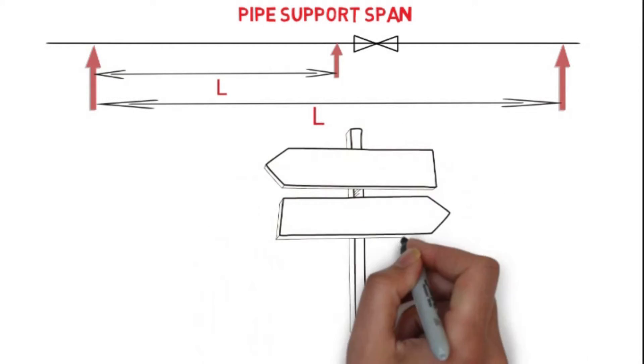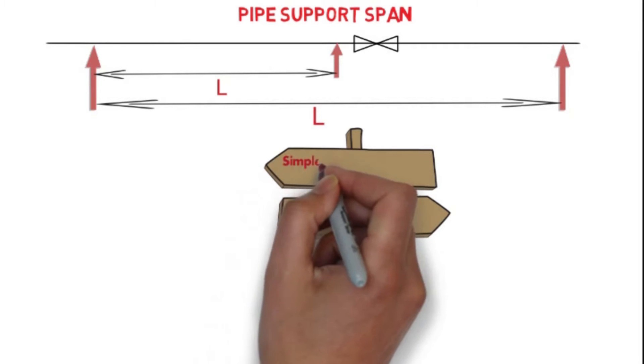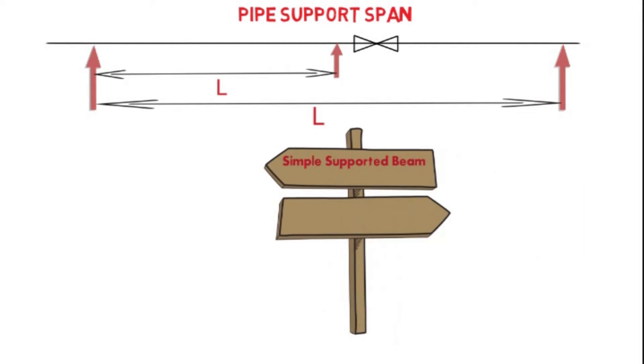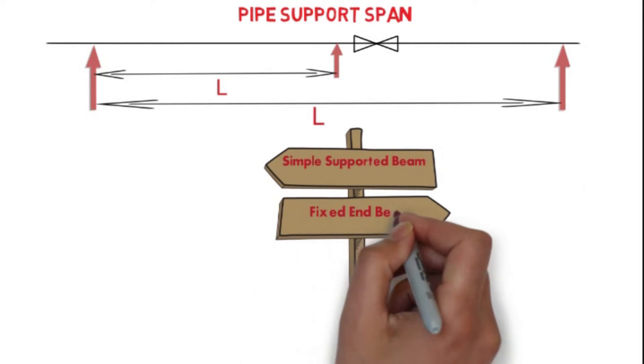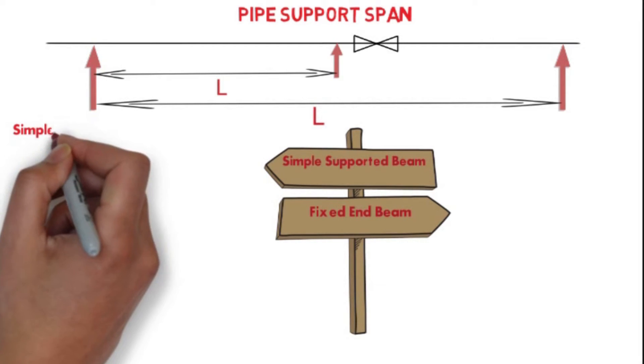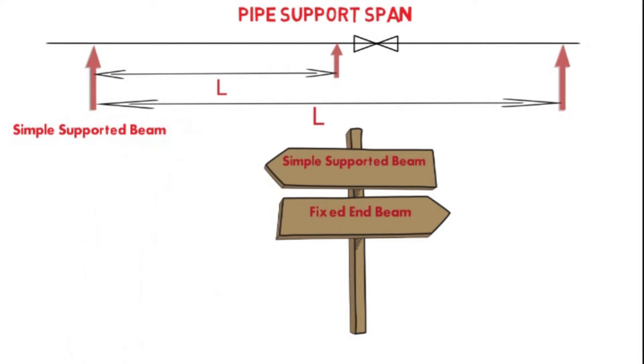One is the simple supported beam, which is also called pin end system, and the second is fixed end beam. Let's see the first case: simple supported beam. Maximum bending moment, bending stress, and force on the support can be calculated with this formula.